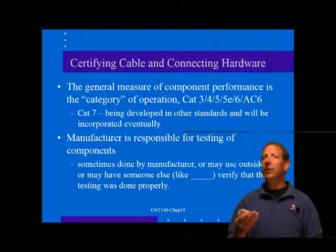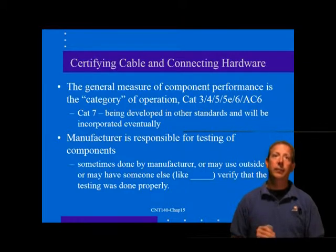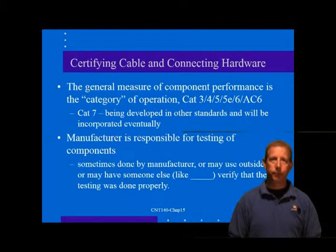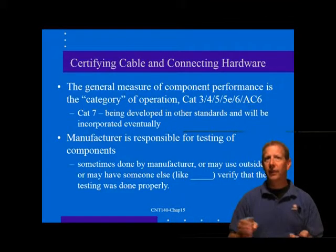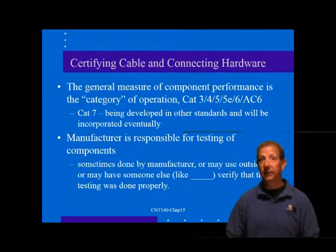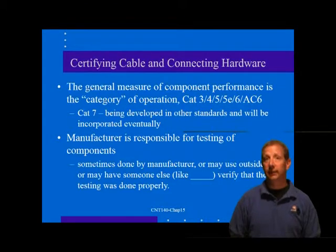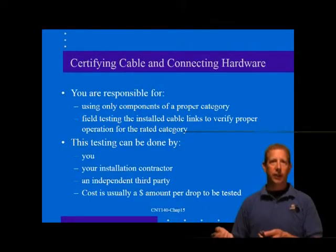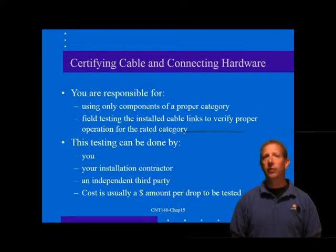The 568C standard contains information regarding the performance levels of connecting hardware and cable used for telecommunications wiring, with explicit testing methods and references to documents from other organizations such as ASTM-D-4566. Cable and connecting hardware manufacturers offer components providing a certain level of performance as delineated by the standard. The general measure of component performance is the category of operation: Cat-3, 5E, 6, and Aug Cat-6 are defined in the standard, while Cat-7 is forward-looking and will be incorporated into the base standard eventually.